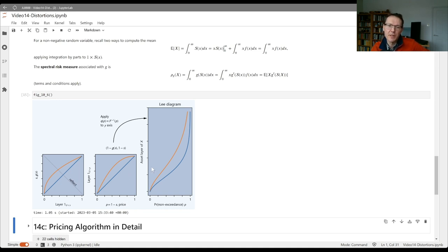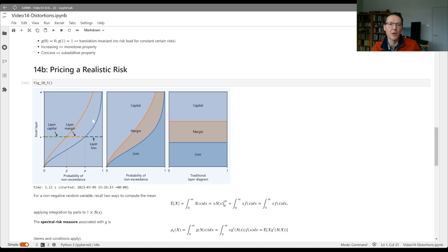Then the second thing that we do is, rather than considering a 0-1 risk, we want to consider our more general risk. We're going to transform the layer. Rather than have it go from 0 to 1, we're going to apply the inverse of the distribution function to it, and it's going to go from 0 up to whatever level of assets that we're considering. That transforms this original picture into the revised picture that we're showing here.